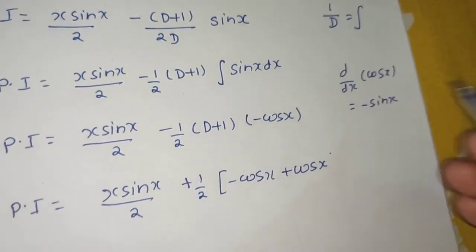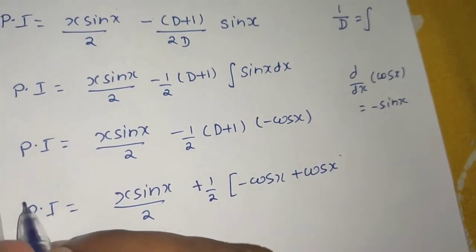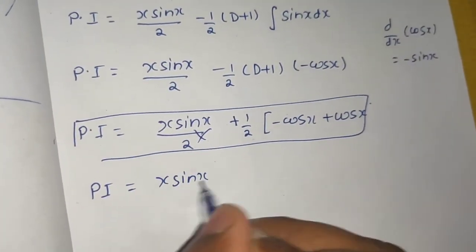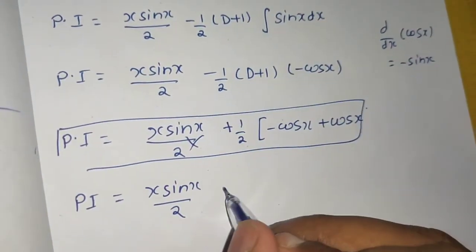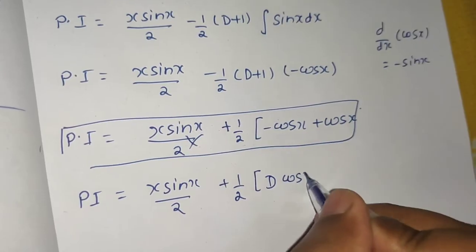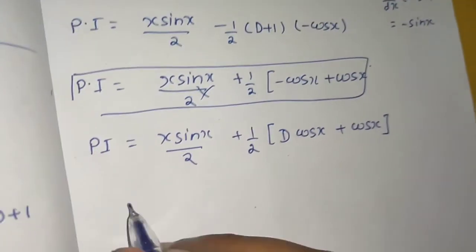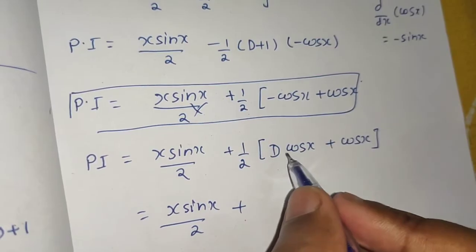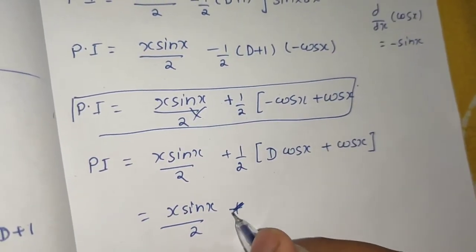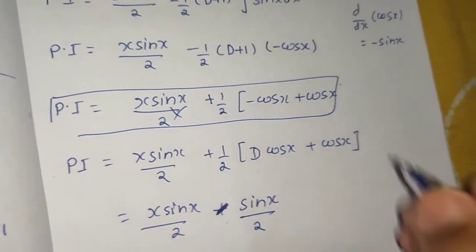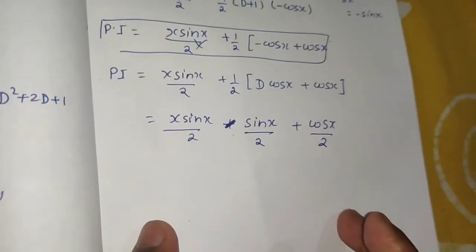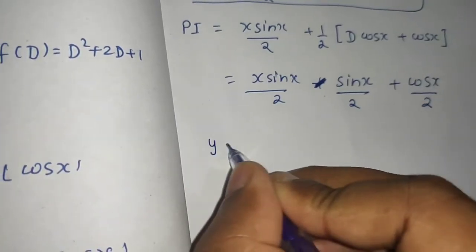So d/dx(cos x) = −sin x. Putting it together: PI = x·sin x / 2 − (−sin x)/2 − cos x terms simplify. Taking 1/2 common: PI = x·sin x/2 − sin x/2 + cos x/2 — wait, combining carefully: PI = x·sin x / 2 minus sin x / 2 plus cos x / 2. This is the particular integral.